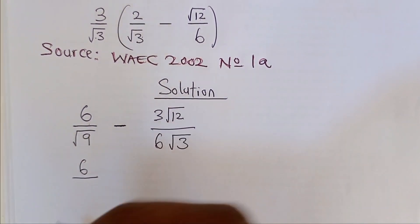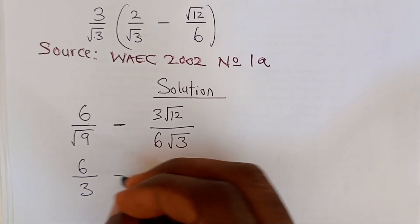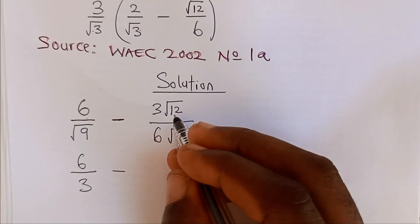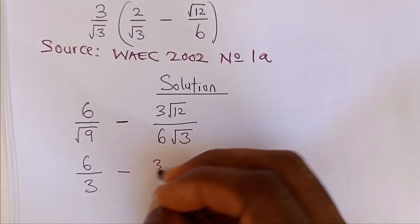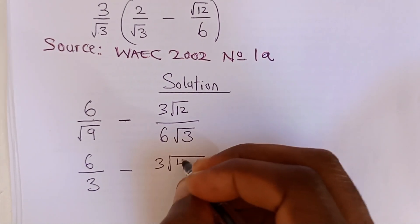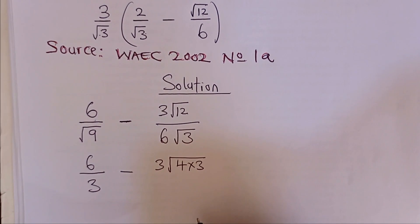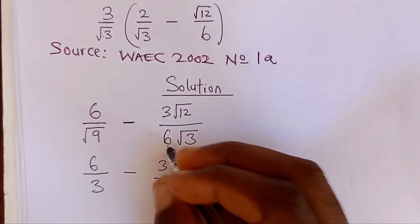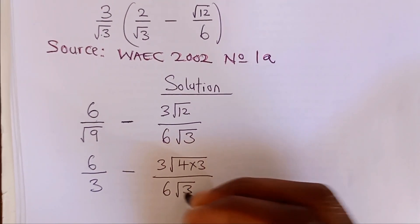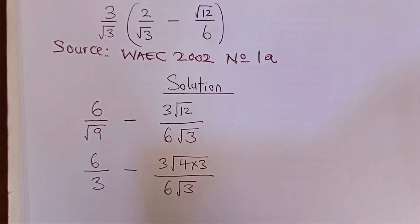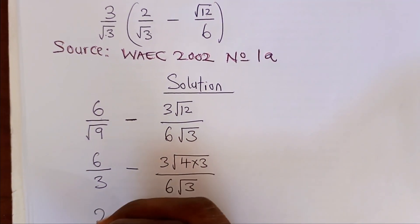This is now 6 over square root of 9, which is 3, minus this 12 we can simplify further as 4 times 3, because 4 is a perfect square inside 12, all over 6 root 3. So 6 divided by 3 will give us 2.